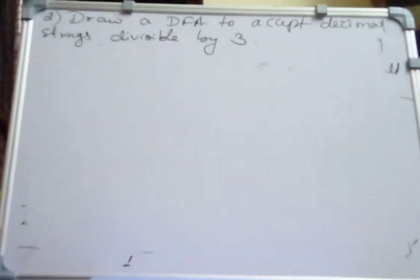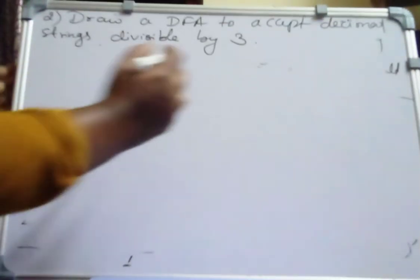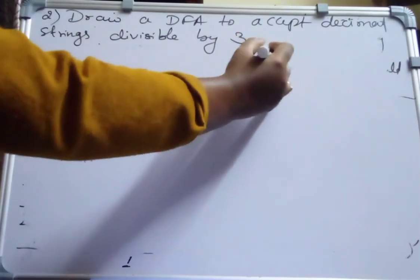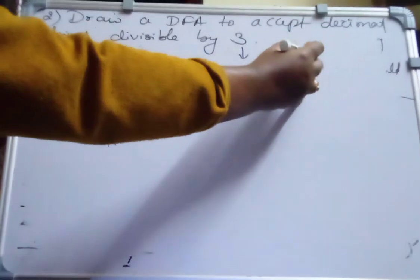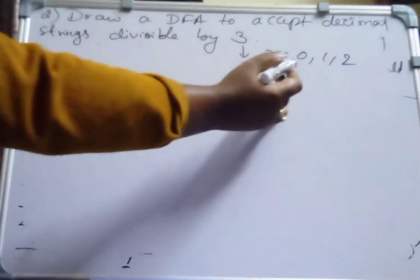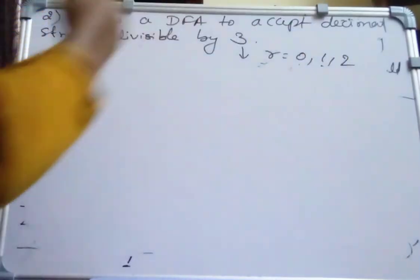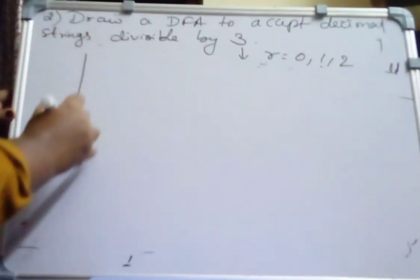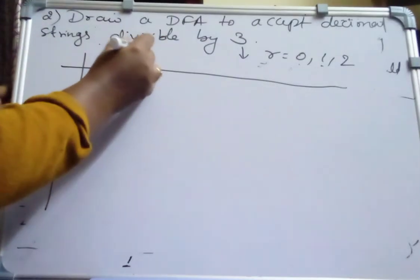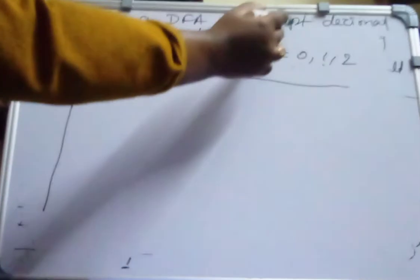Instead of doing like this, we will follow a shortcut method to construct the DFA. As I told in the first problem, the shortcut method is first take the possible reminders. It is divisible by 3, right? Note down the reminders of 3. Reminders of 3 are 0, 1 and 2. It means the DFA has 3 states, Q0, Q1 and Q2. Now try the transition table first. The alphabet set, it is what? Accept decimal strings. Decimal strings starts from 0 to 9.